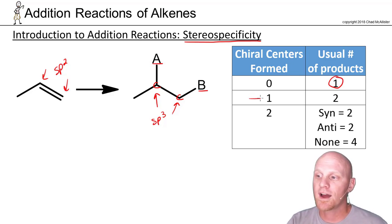If you form one chiral center, you're typically going to form two products. So it turns out every single alkene reaction we look at, if you form one chiral center, you'll form both the R and the S version of that chiral center. It's when you form two chiral centers that this gets a little bit tricky, and this idea of stereospecificity matters.